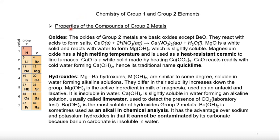Looking at properties of group two compounds — the oxides react with acid to give a salt, for example calcium nitrate. Magnesium oxide reacts with water to give magnesium hydroxide, which is slightly soluble. Magnesium oxide has a very high melting point, making it heat resistant. It is used as a ceramic to line furnaces for high temperature applications. Calcium oxide, on heating, becomes calcium carbonate, and reacts rapidly with water to give calcium hydroxide, also called quicklime.